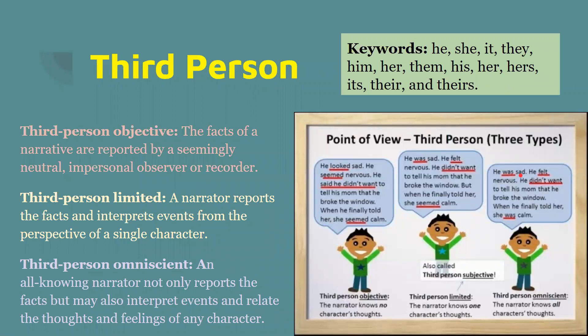For third person, it's a little bit different. Here are the keywords: he, she, it, they, him, her, them, his, her, hers, its, their, and theirs. There are three different types of third person point of view.